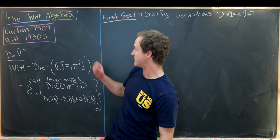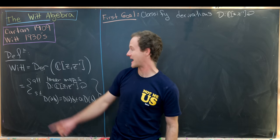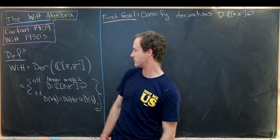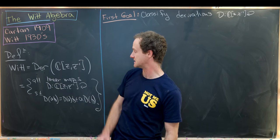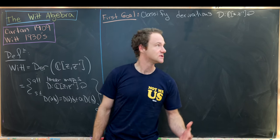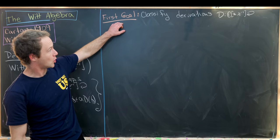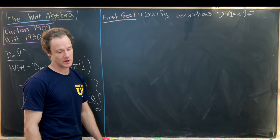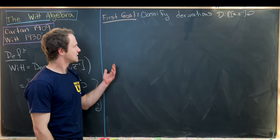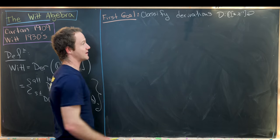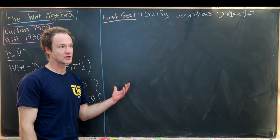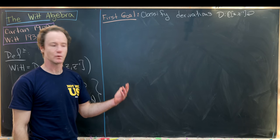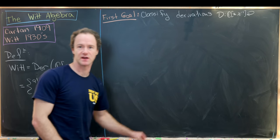We got a formal definition of the Witt algebra as the derivations of the Laurent polynomial ring C[z, z inverse]. Our first goal is to classify these derivations. Let's see what a derivation does to constants and then to powers of z.